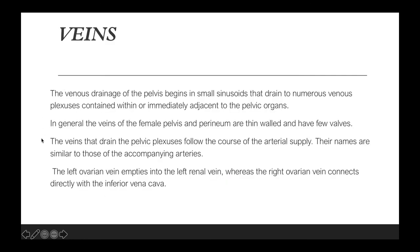For the veins: the venous drainage of the pelvis begins in small sinusoids that drain to numerous venous plexuses within or immediately adjacent to the pelvic organs. The veins of the female pelvis and perineum are thin-walled and have few valves. The veins that drain the pelvic plexuses follow the course of the arterial supply and their names are similar to those of the accompanying arteries. The left ovarian vein empties into the left renal vein, whereas the right ovarian vein connects directly with the inferior vena cava.